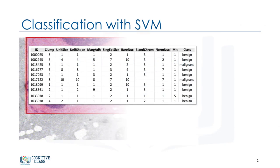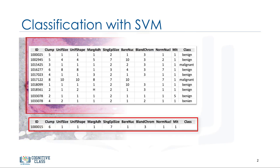Imagine that you've obtained a dataset containing characteristics of thousands of human cell samples extracted from patients who were believed to be at risk of developing cancer. Analysis of the original data showed that many of the characteristics differed significantly between benign and malignant samples. You can use the values of these cell characteristics in samples from other patients to give an early indication of whether a new sample might be benign or malignant.